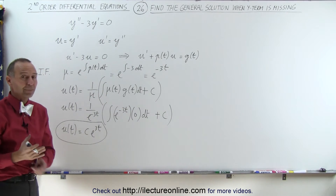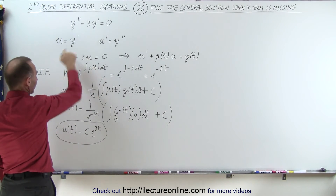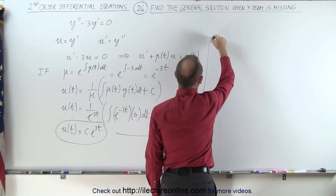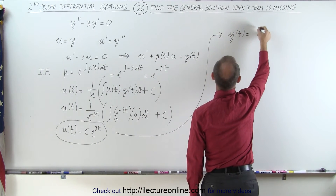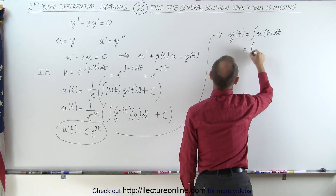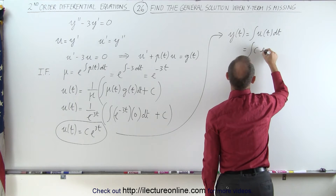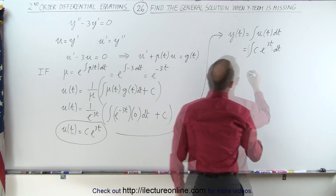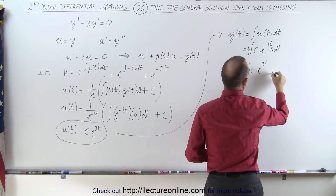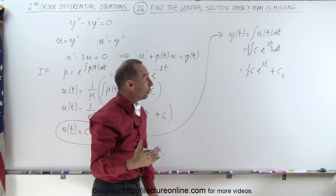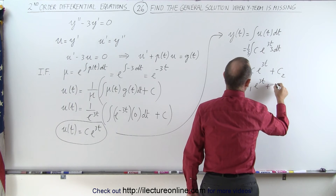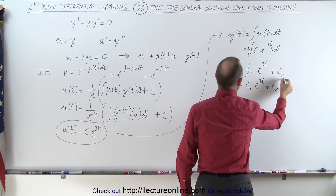Now we need to go back and find y. Since u equals y prime, y equals the integral of u. So y as a function of t is equal to the integral of u of t dt, which is the integral of c e to the three t dt. That equals one-third c e to the three t plus a constant of integration c2. Calling one-third c as c1, we get y equal to c1 e to the three t plus c2, which is the general solution to our original second order differential equation.